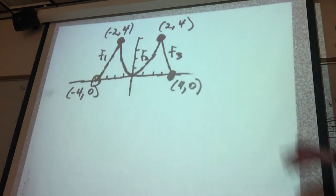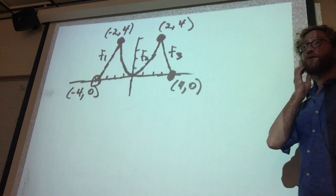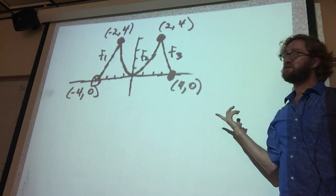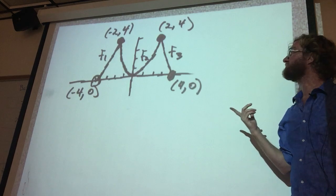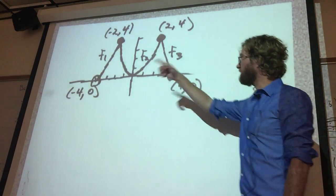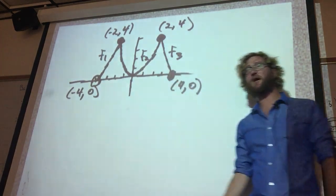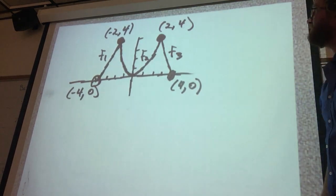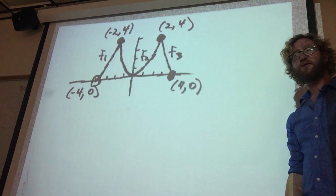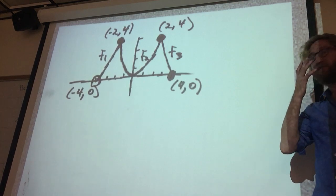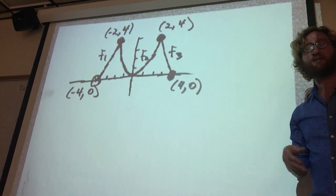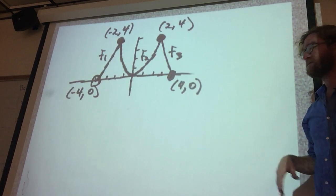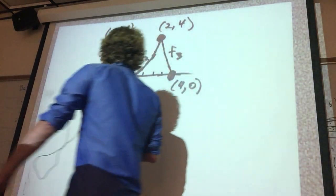When talking about the differences between continuity and differentiability, let's take this type of function that consists of a line, a quadratic, and a line. We need to figure out the equations of these lines, then graph the derivative and see that the derivative from different directions doesn't agree with each other.